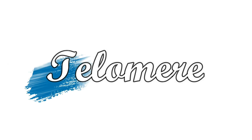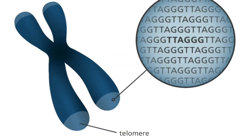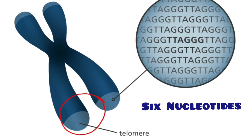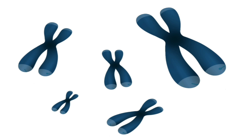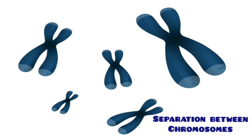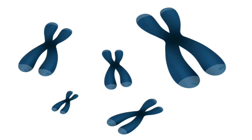We need to know more about the telomere. The telomere is the cap at the end of the chromosome. It consists of six nucleotides: TTAGGG. This sequence TTAGGG is repeated approximately 2,500 times. The functions of the telomere are: first, separation between chromosomes and prevention of fusion between chromosomes; and second, chromosome and DNA protection.